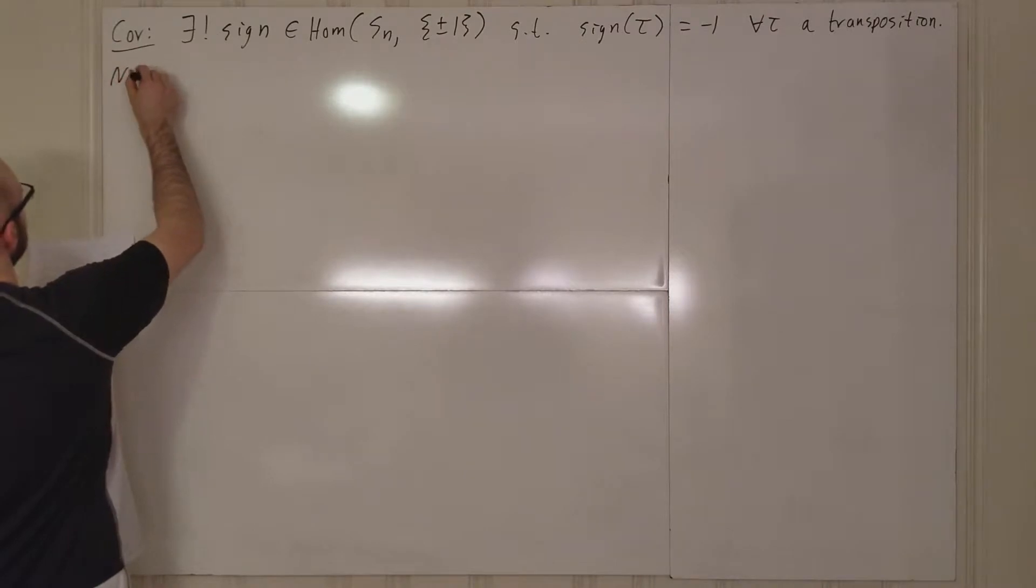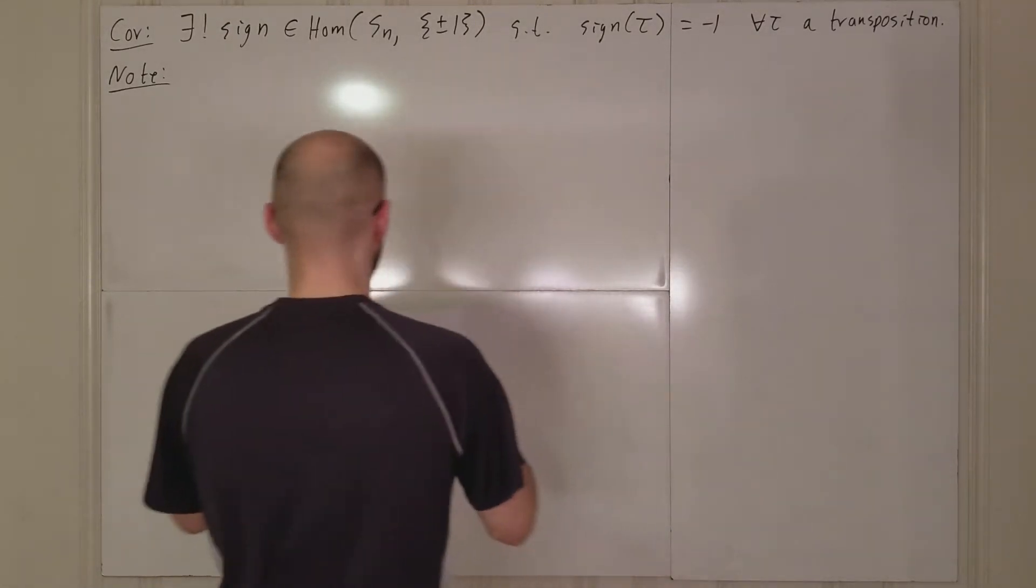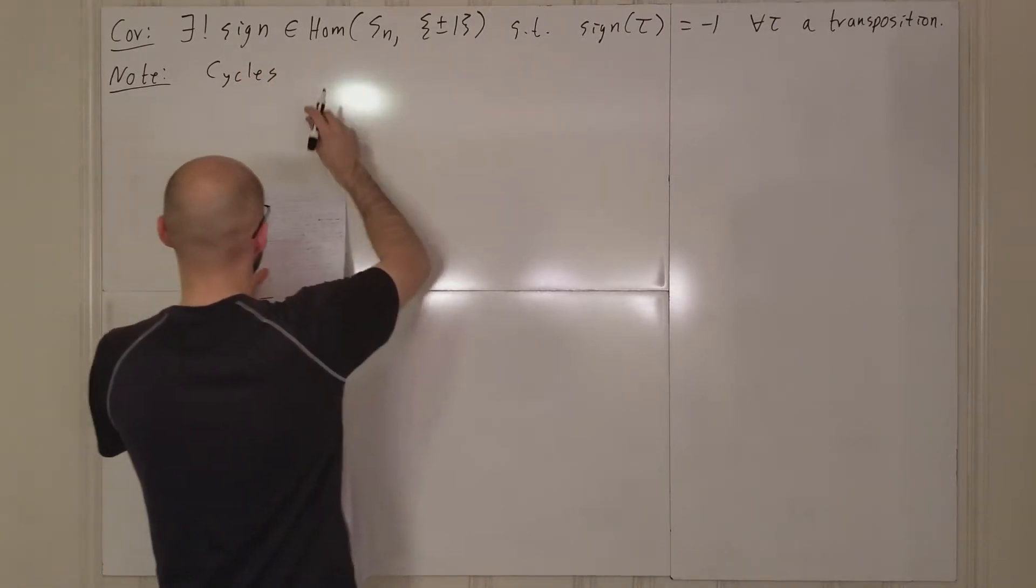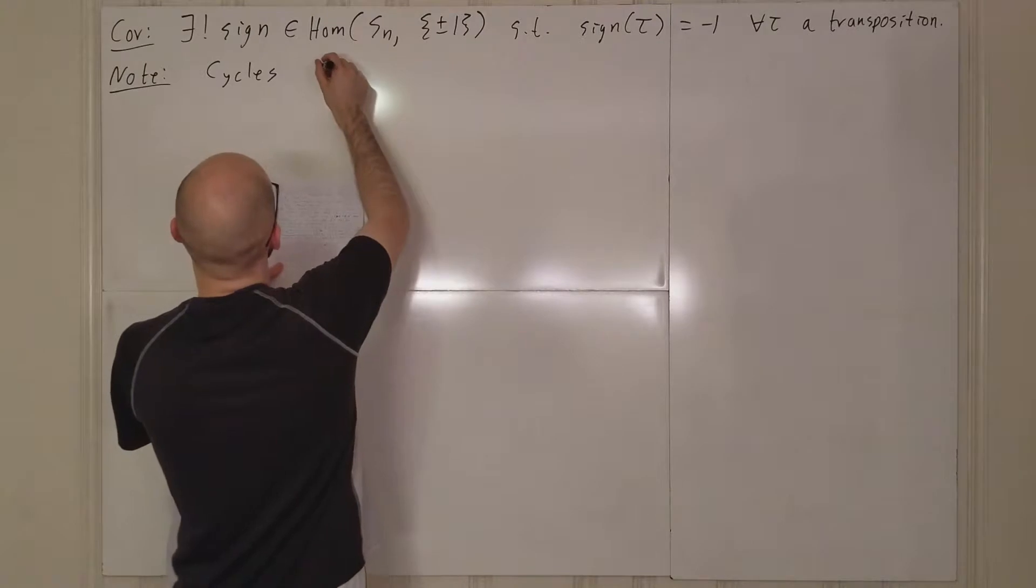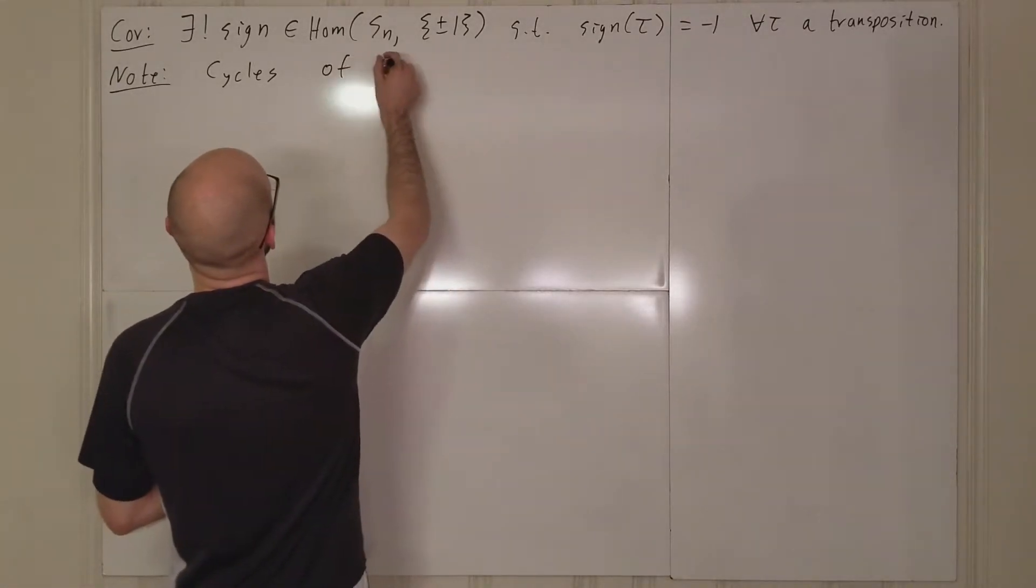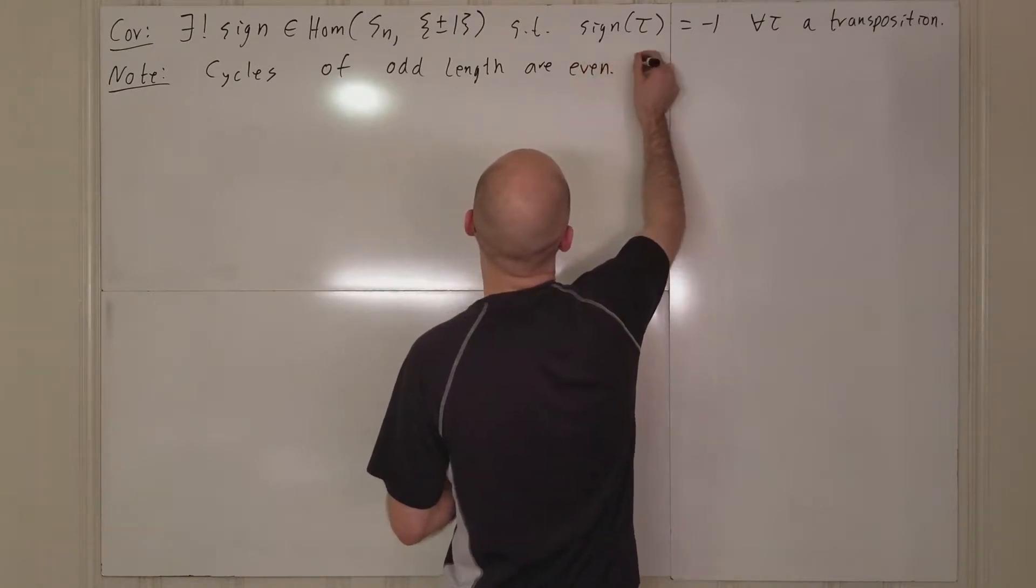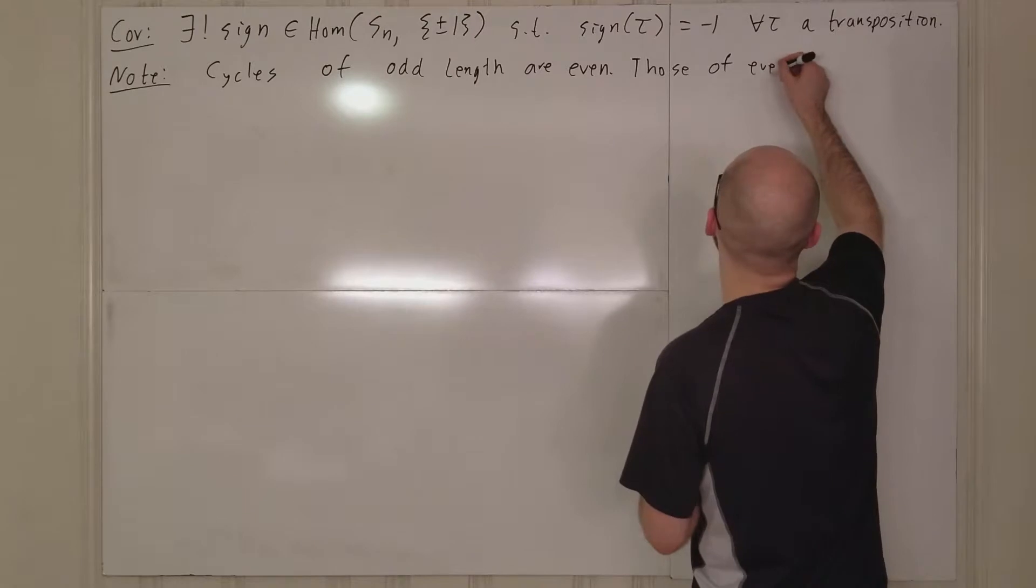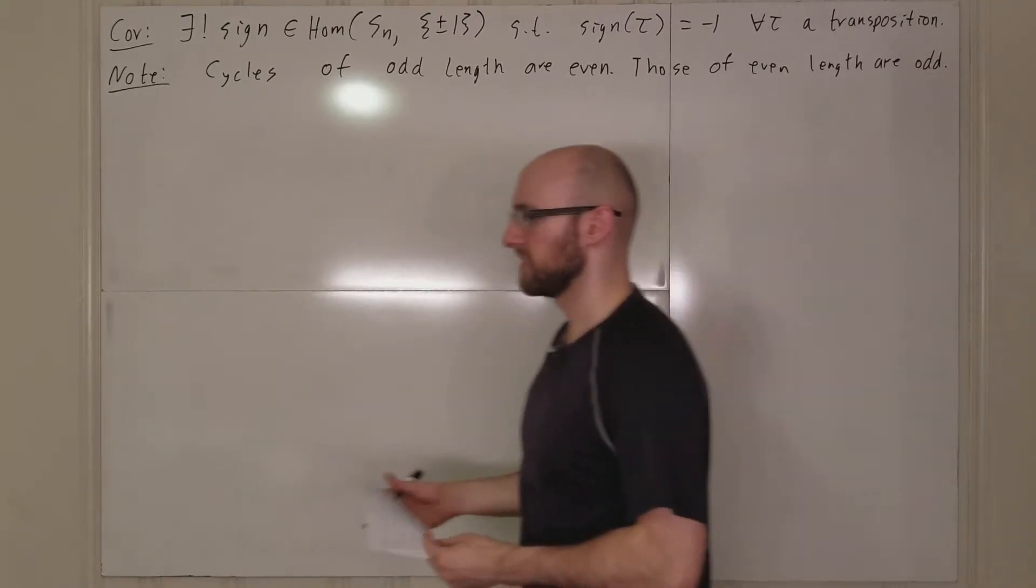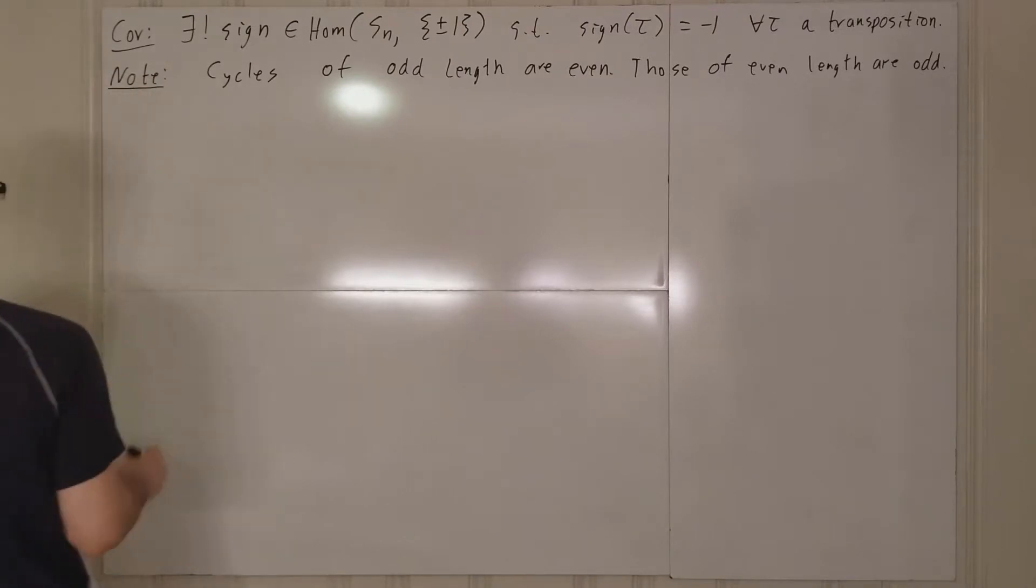So, note, and this is really confusing when you're learning this for the first time, but the more you think about parity in terms of transpositions, the less confusing it is. Cycles of odd length are even, those of even length are odd. So that's really weird. And so you might think maybe we defined it backwards, but I don't think so. I think the way we've defined it is really the more natural way because transpositions are really sort of your building blocks.